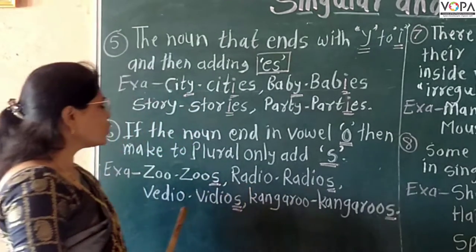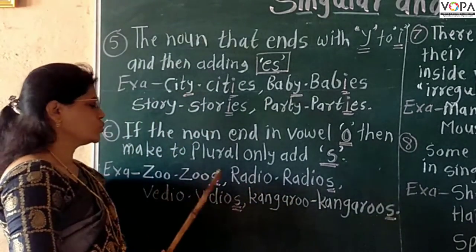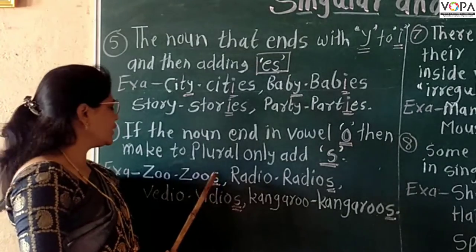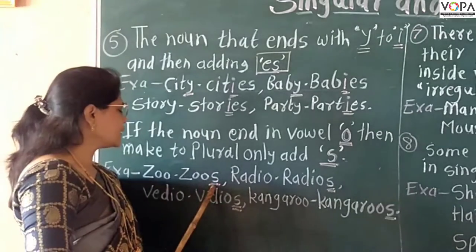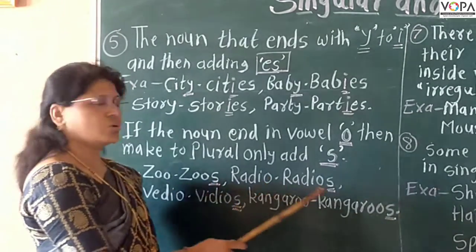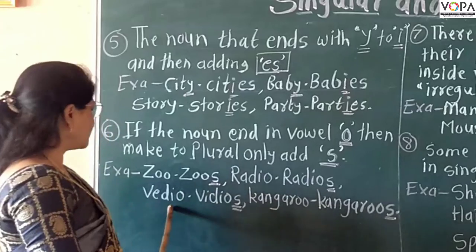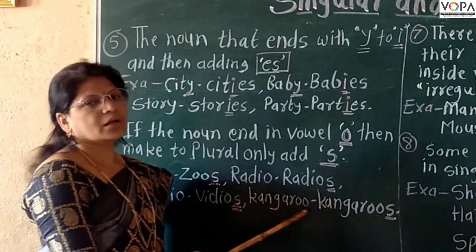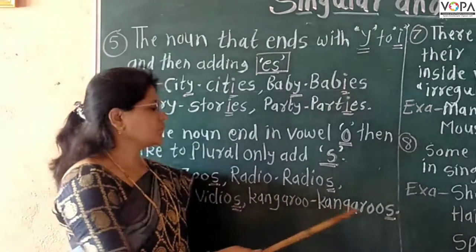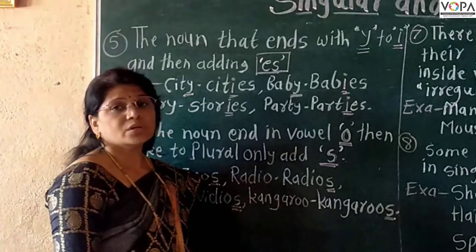For example: zoo becomes zoos — only add -s. Radio becomes radios. Video becomes videos. Kangaroo becomes kangaroos.